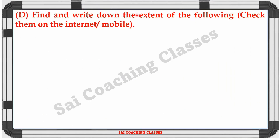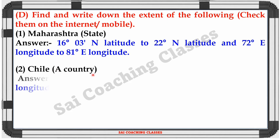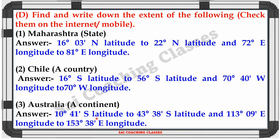Question D: Find and write down the extent of the following — check them on the internet or mobile. Maharashtra state: 16 degree 3 minutes North latitude to 22 degree North latitude, and 72 degree East longitude to 81 degree East longitude. Chile: 16 degree South latitude to 56 degree South latitude, and 70 degree 40 minutes West longitude to 70 degree West longitude. Australia: 10 degree 41 minutes South latitude to 43 degree 38 minutes South latitude, and 113 degree 9 minutes East longitude to 153 degree 38 minutes East longitude.